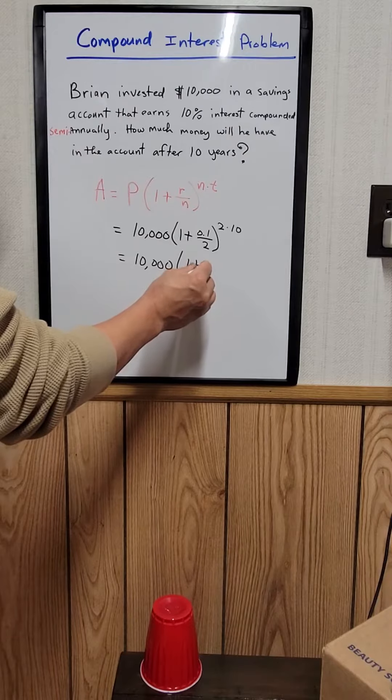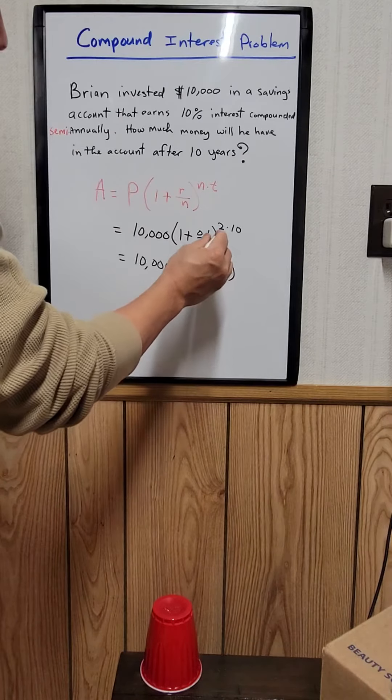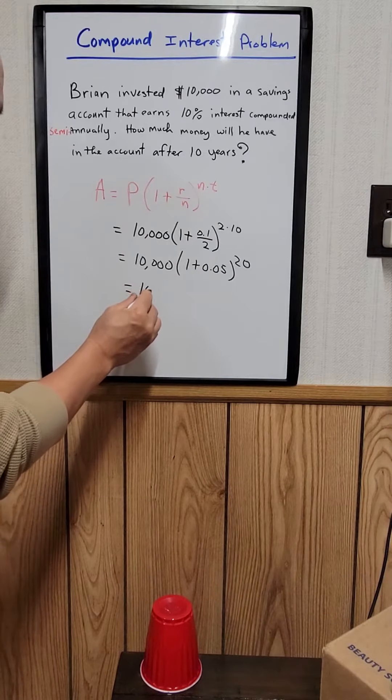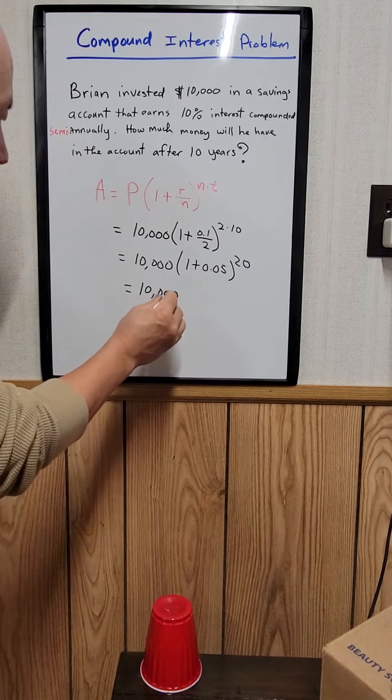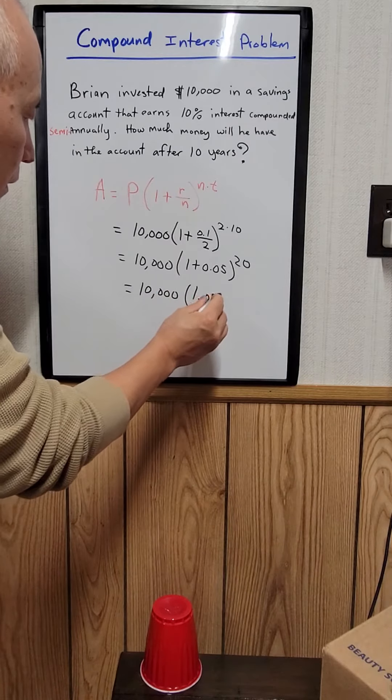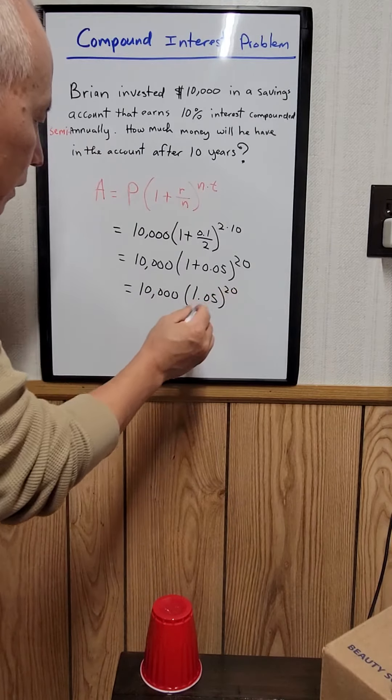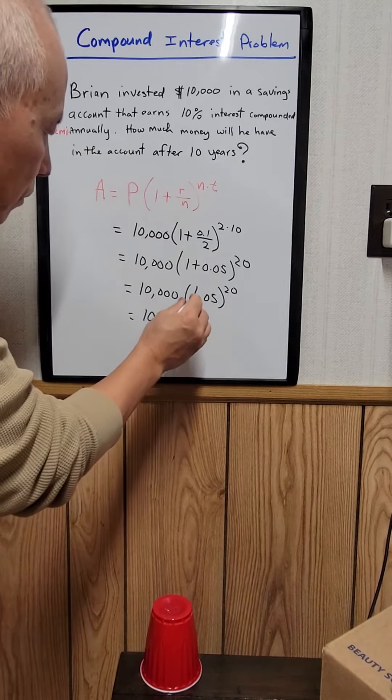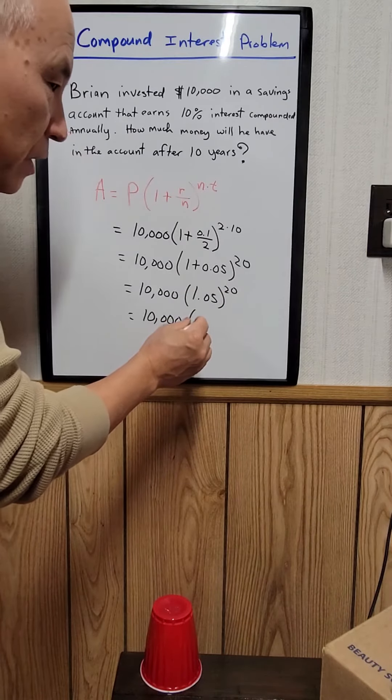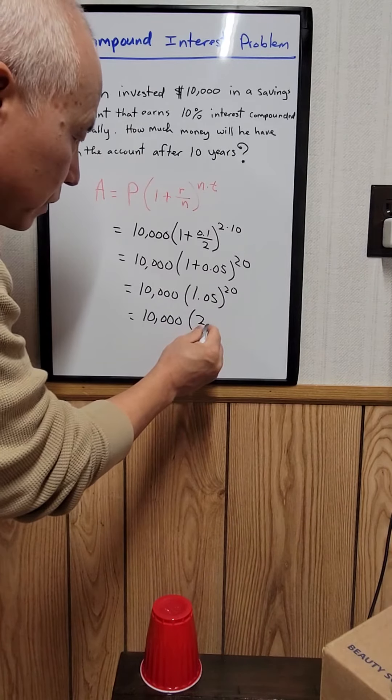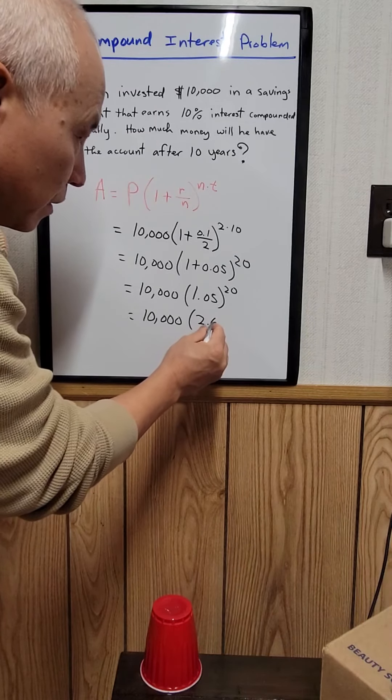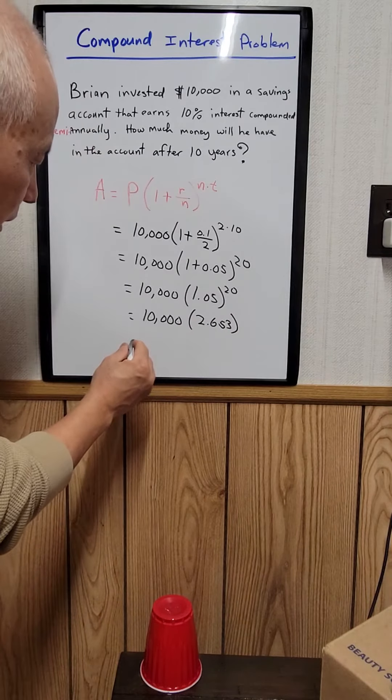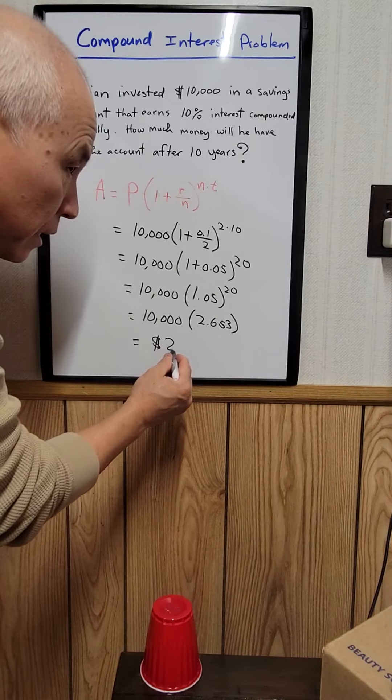So we have 10,000 times 1.05 to the 20th power. 1.05 to the 20th power equals approximately 2.653. Multiply that by 10,000 and you get $26,532.